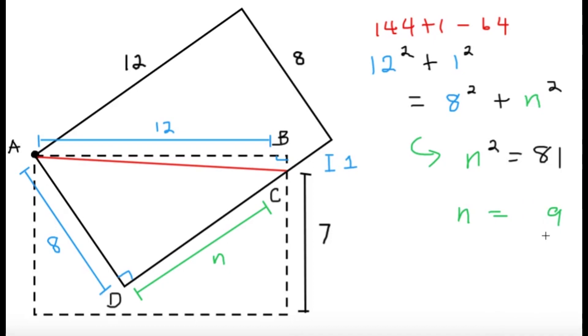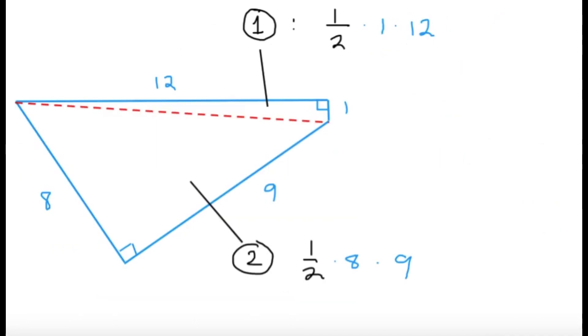So let's try to focus on ABCD. You can actually split it into two areas, so let's get the first one, it's just going to be 1 half times base times height.